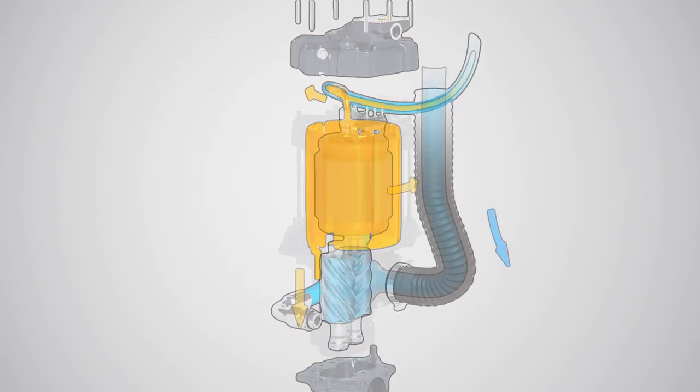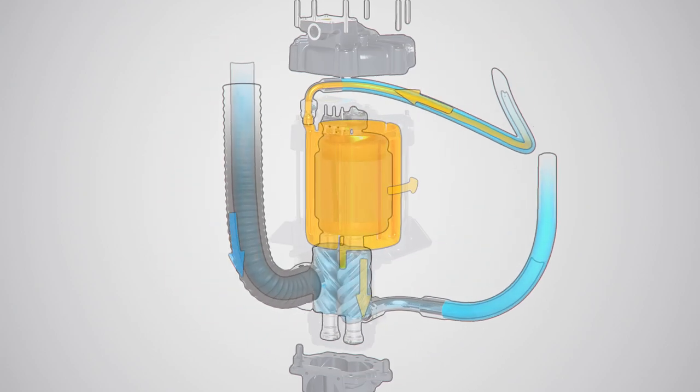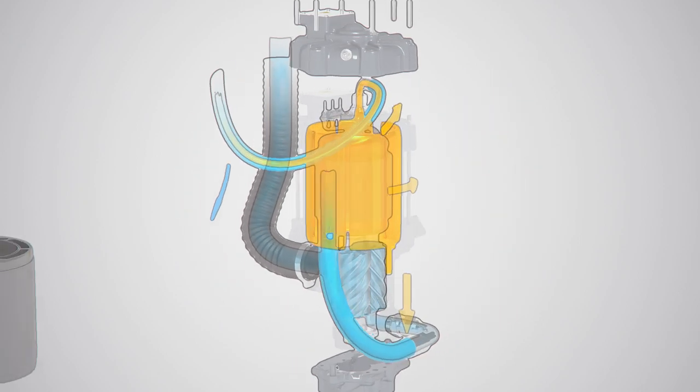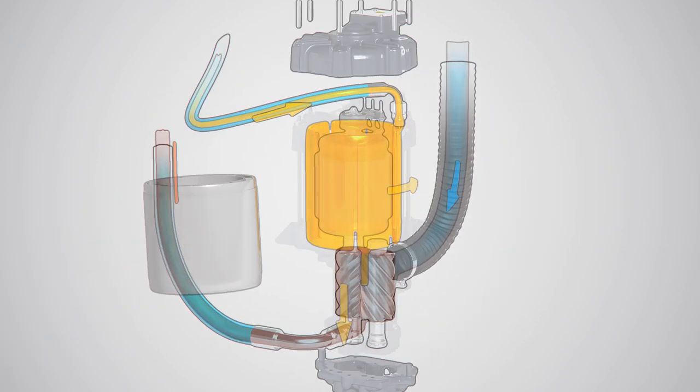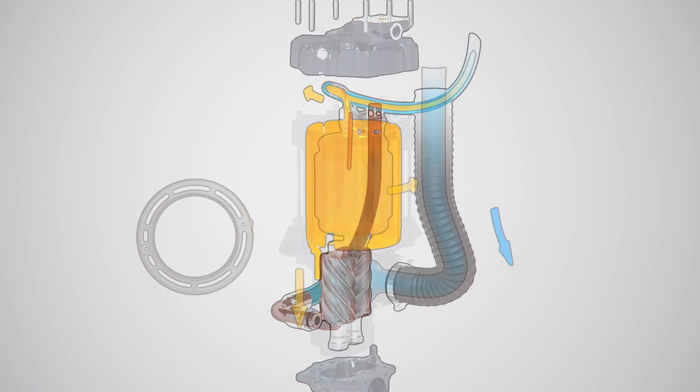The oil then continues its way down to the compression element, where it lubricates and cools the rotors. The oil is taken through this same process again and again.